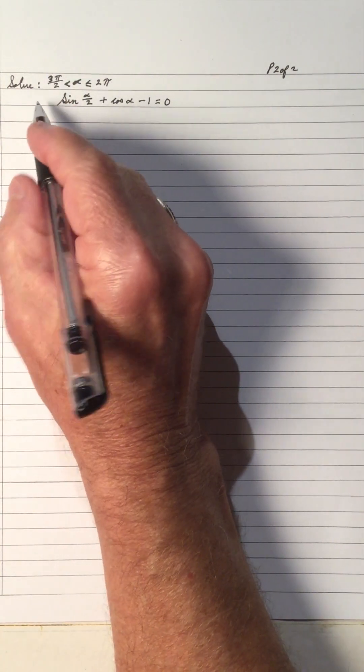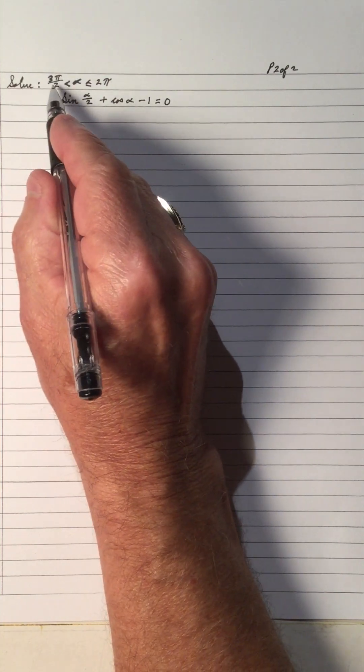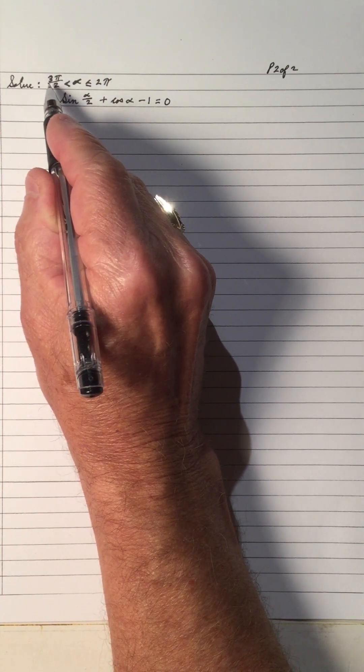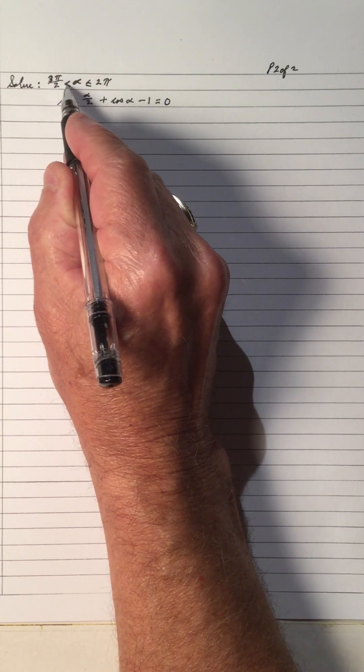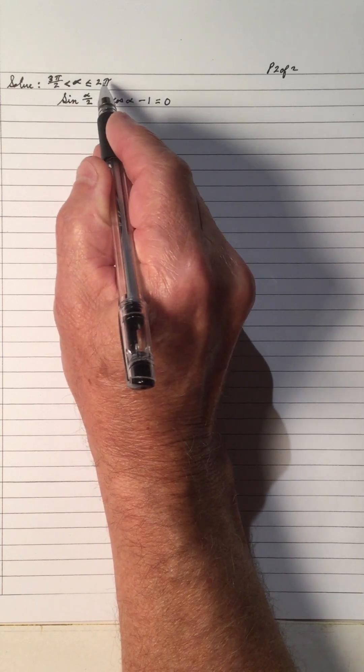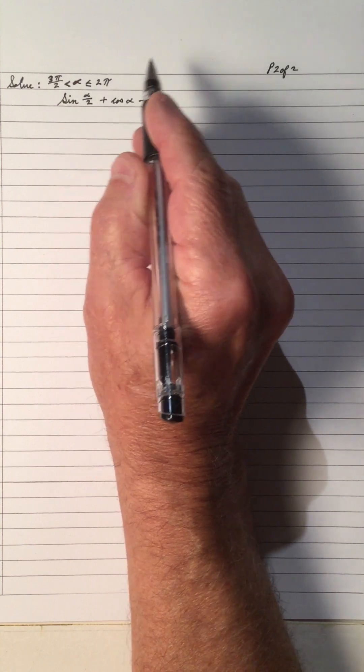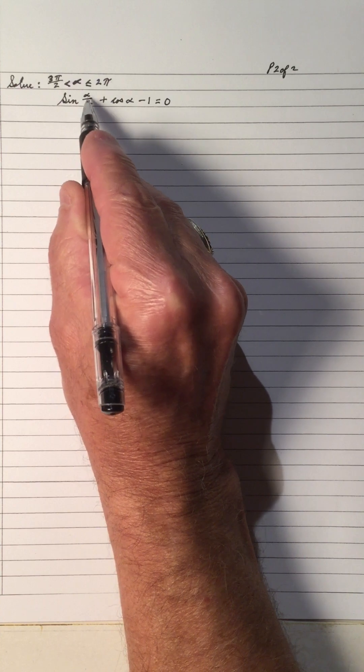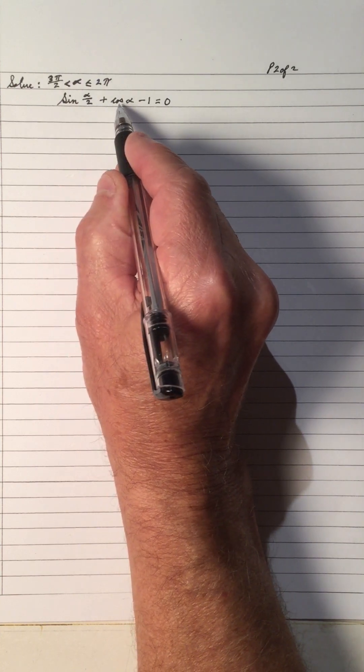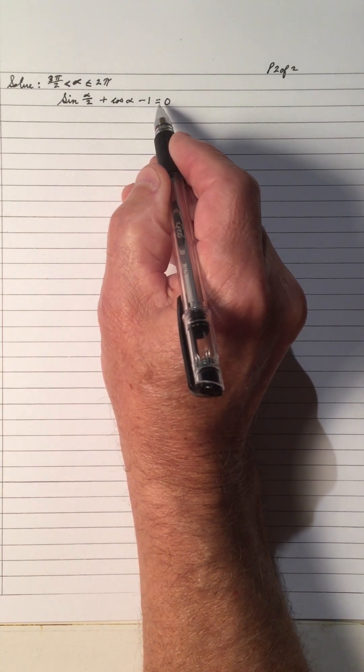Hi, welcome to my video on extra problems number 7. In this video I'm going to solve this equation for 3π over 2 less than or equal to α less than or equal to 2π. We're going to solve the equation sin(α/2) + cos(α) - 1 = 0.